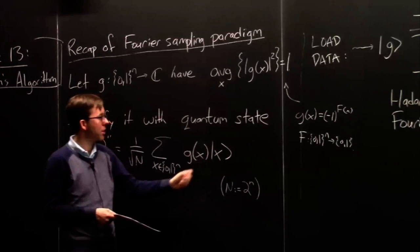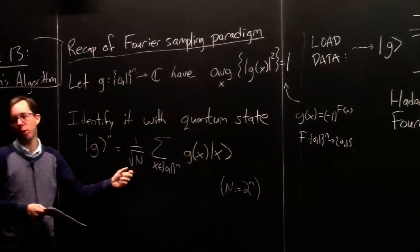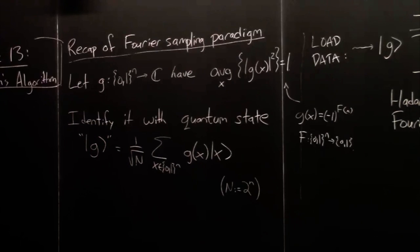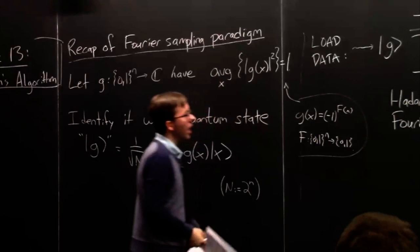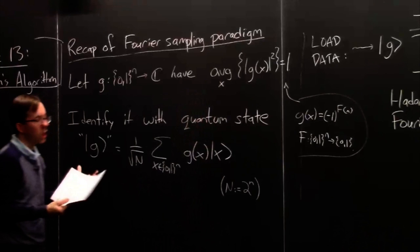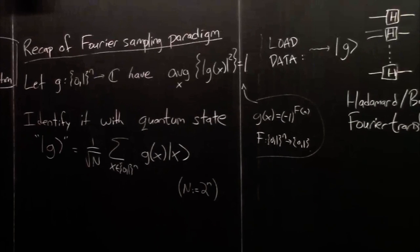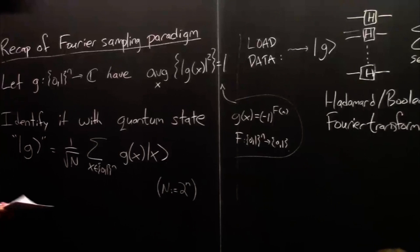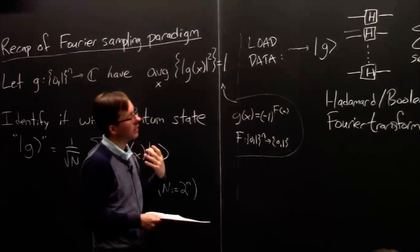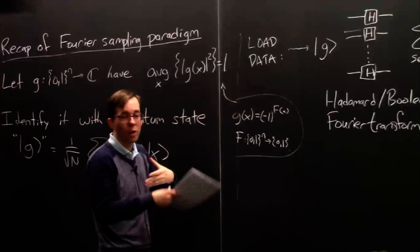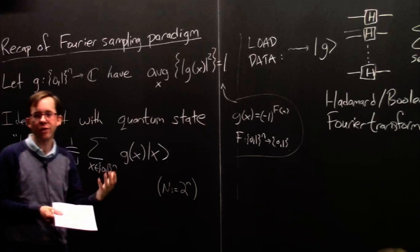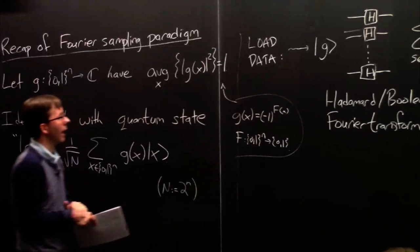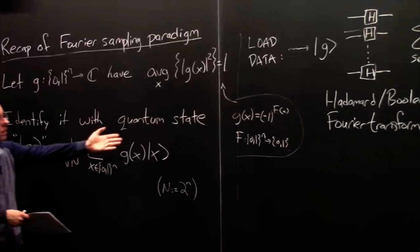Ket g is basically a sum over all kets x of g(x) as the amplitude, with a normalization constant 1 over square root N built in. In the Fourier sampling paradigm, you imagine loading your data into n qubits — we saw a way to do that last time, basically taking the uniform superposition over all x and passing it through the quantum version of a classical circuit computing a Boolean function F, giving us ket g.